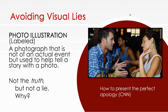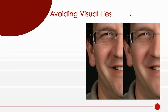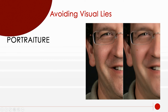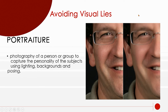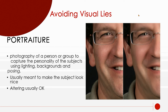You have to be careful if you're using photography for journalism — ethically, if it is not an actual event, it must be labeled as such. A portrait, which is a photograph of a person or group meant to capture their personality, can sometimes be a visual lie through retouching. Altering portraits is usually acceptable — think about Instagram — but these are not to be used for journalistic representation of a person.